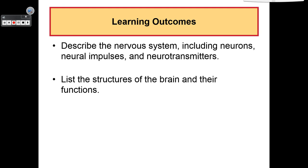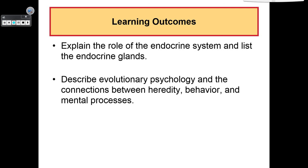With that said, let's begin as we discuss biology and psychology. This time around we are going to describe the nervous system including neurons, neural impulses, and neurotransmitters. We will list the structures of the brain and their functions. We will explain the role of the endocrine system and list the endocrine glands. We will describe evolutionary psychology and the connections between heredity, behavior, and mental processes.